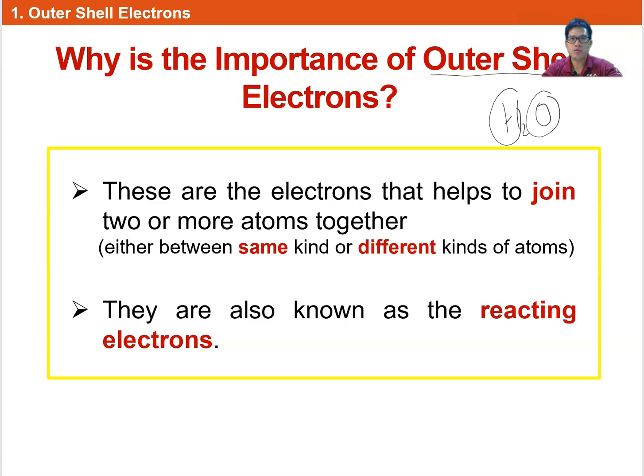Intramolecular forces are the chemical bonding between atoms. How they bond together is through outer shell electrons. Whenever atoms bond together, they follow what we call the octet rule. The octet rule means they fill up the outer shell electrons to make eight electrons in the outer shell — 'octet' means eight.